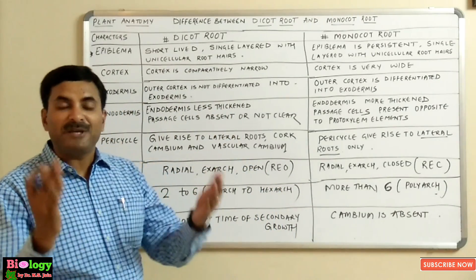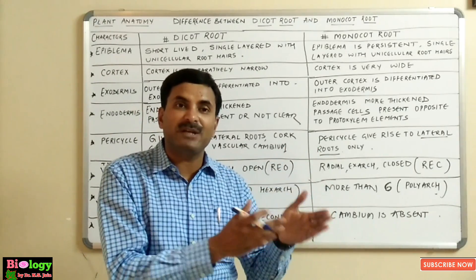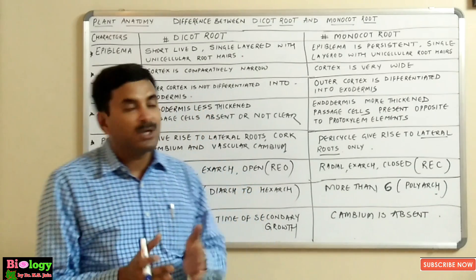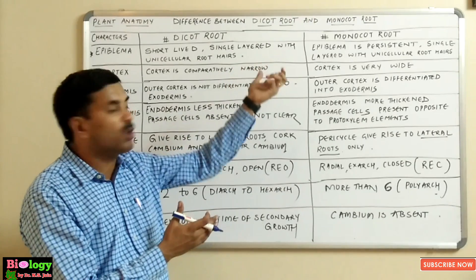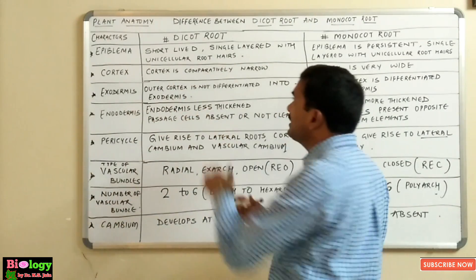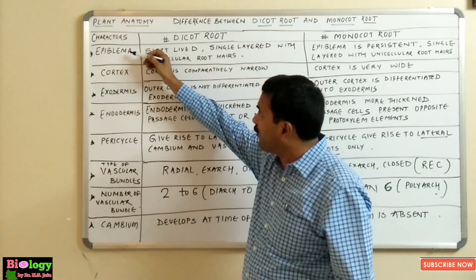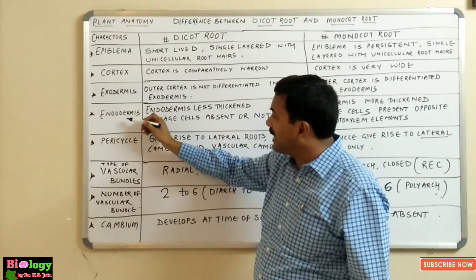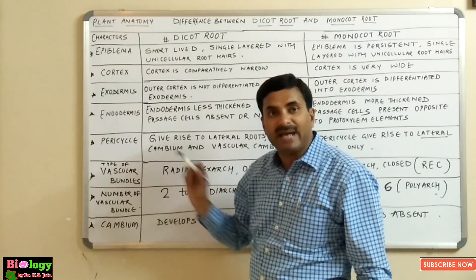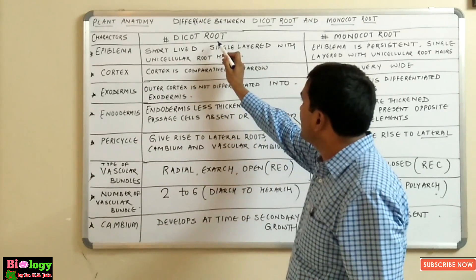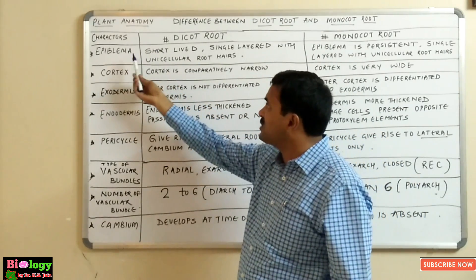Hello students. In the previous topic we discussed the differences between the dicot stem and the monocot stem. Today we have a new topic: the difference between the dicot root and the monocot root. I have made three columns here — the first is the column of characters, and then dicot root and monocot root.